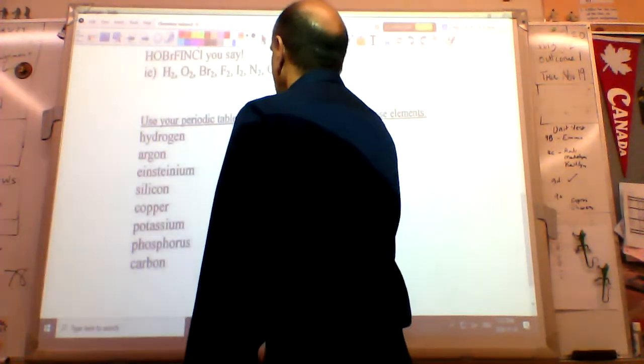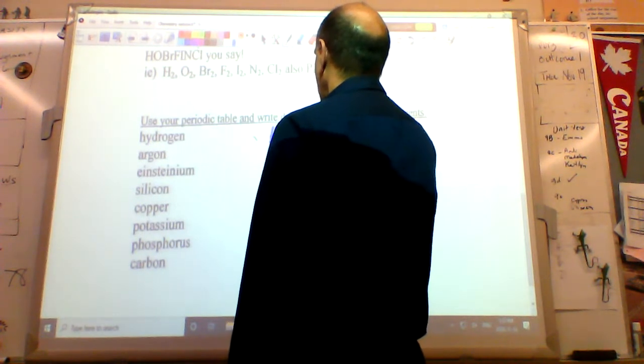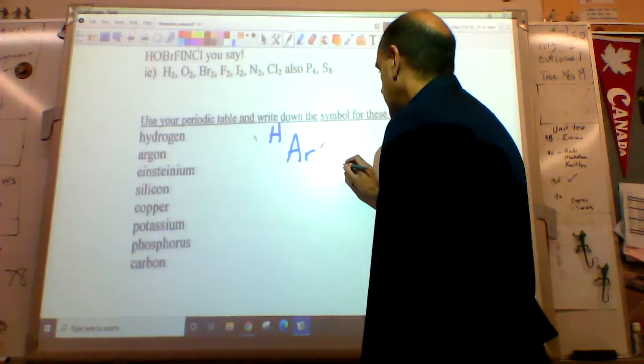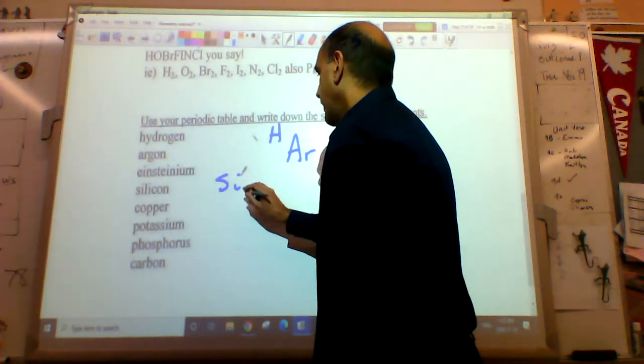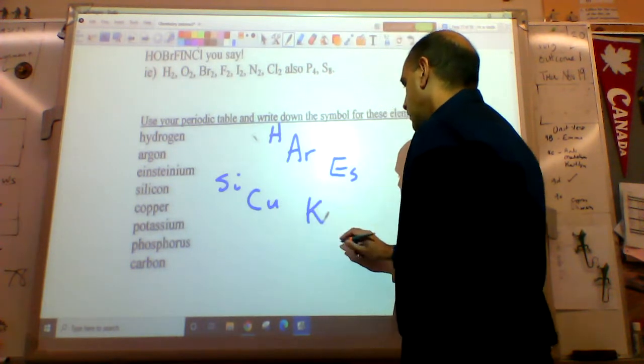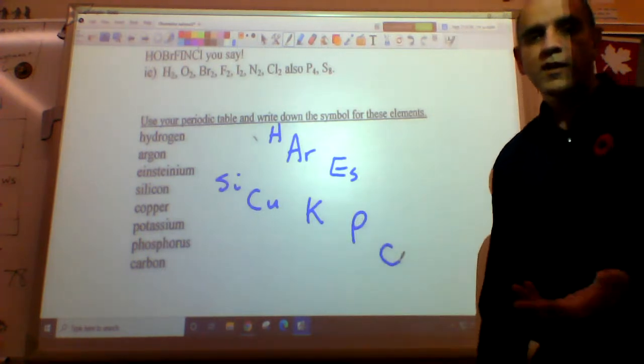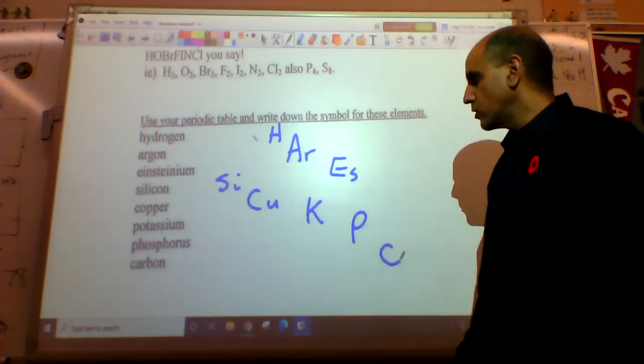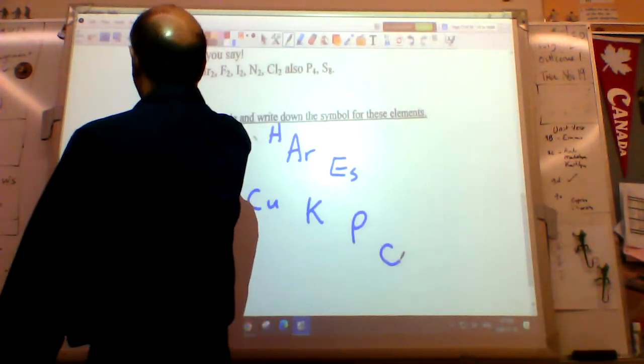Technically that's grade 10 material, but it's always nice to see it in advance. Use your periodic table and write down the symbol for these. Using your periodic table, hydrogen is H, argon is capital A little r, Einsteinium is capital E S, silicon is S little i, copper is capital C little u, potassium is just K, phosphorus is just P, and carbon is just C. Every element has its own special symbol and these are all pure substances.